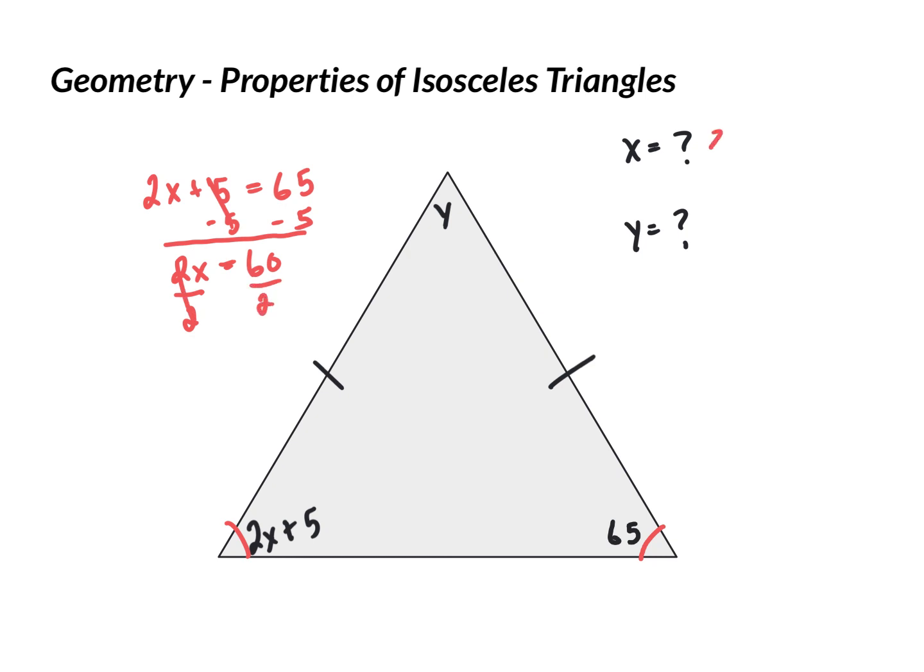But you could have also solved for y first, because we knew this one had to come out to 65. So, we could say that y plus 65 plus 65 equals 180. Never forget to fill in that missing angle, that congruent angle, using these properties. So, y combining these two plus 130 equals 180. Subtract from both sides. y equals 50.